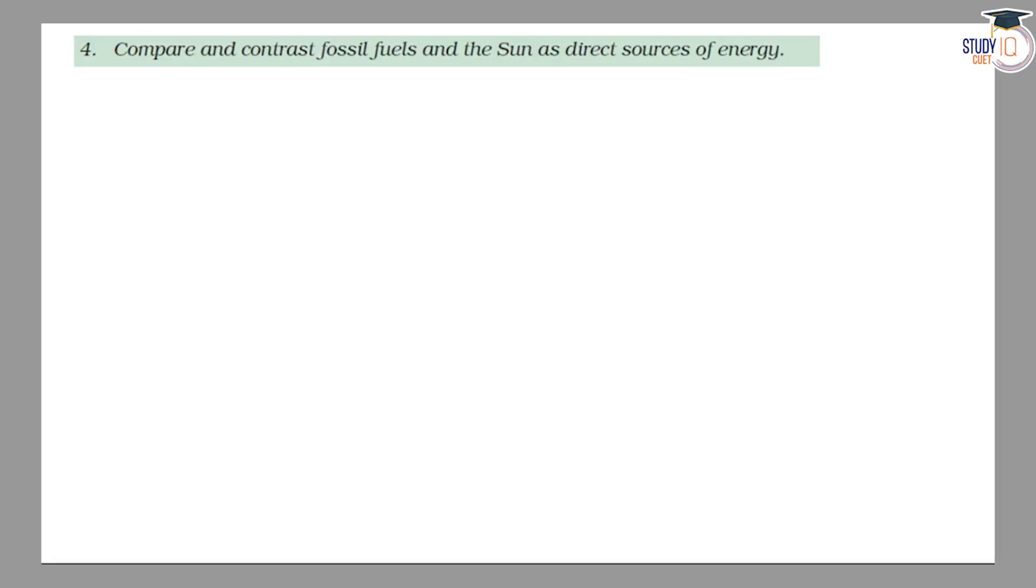Hello students, this is question number 4 from chapter 14 of NCERT class 10. Here we have to compare and contrast fossil fuels and the sun as direct sources of energy. That means we have to compare fossil fuels and solar energy. So we will make a table: fossil fuels and solar energy.